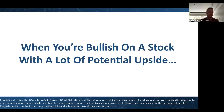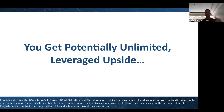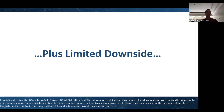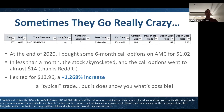When you're bullish on a stock with a lot of potential upside, buying a call option can be a great way to make money. You'll generally get better returns than buying stock for way less capital — you get the same potentially unlimited leveraged upside, plus limited downside. When you're wrong you have that built-in stop loss; you can't lose more than you paid for the option. And all of this comes at a fraction of the cost of owning the same number of shares.